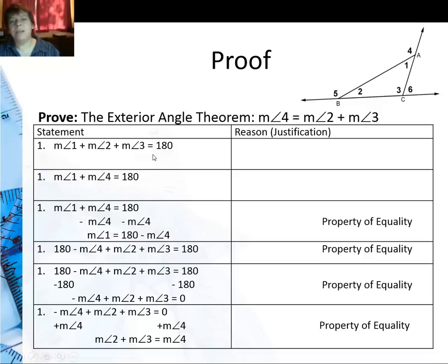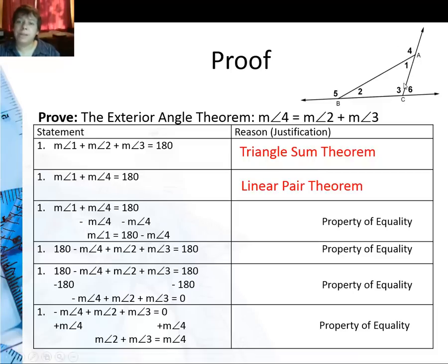The proof is I've got measure of angle one plus two plus three is 180 for this diagram, right? I'm going to prove that angle four equals angle two plus angle three. That's my goal. So I'm going to start by saying all three of these angles in a triangle have to add up to 180 and that is the triangle sum theorem.